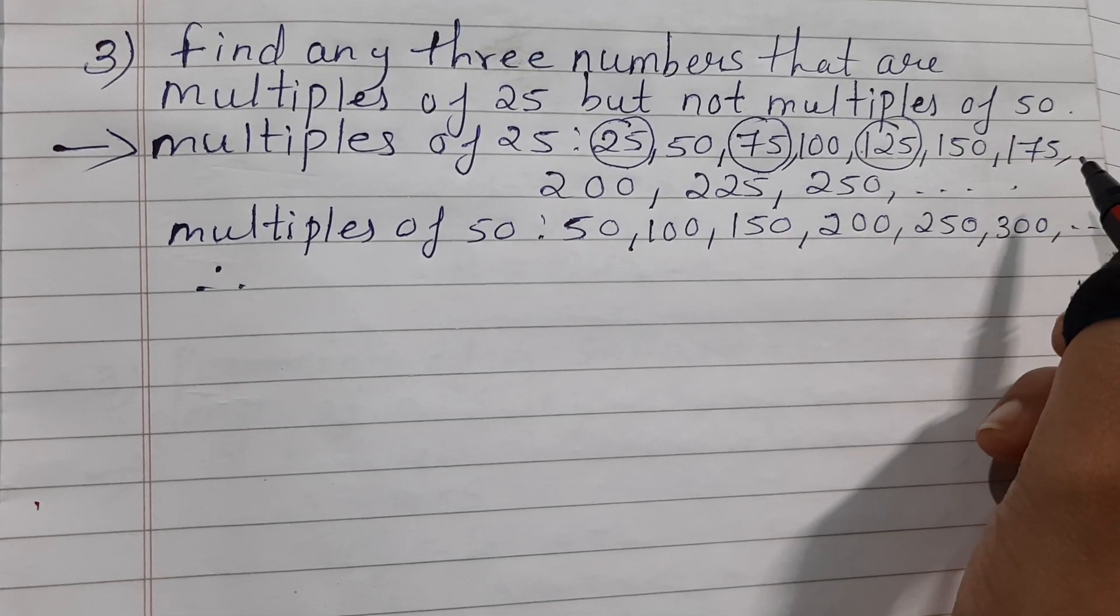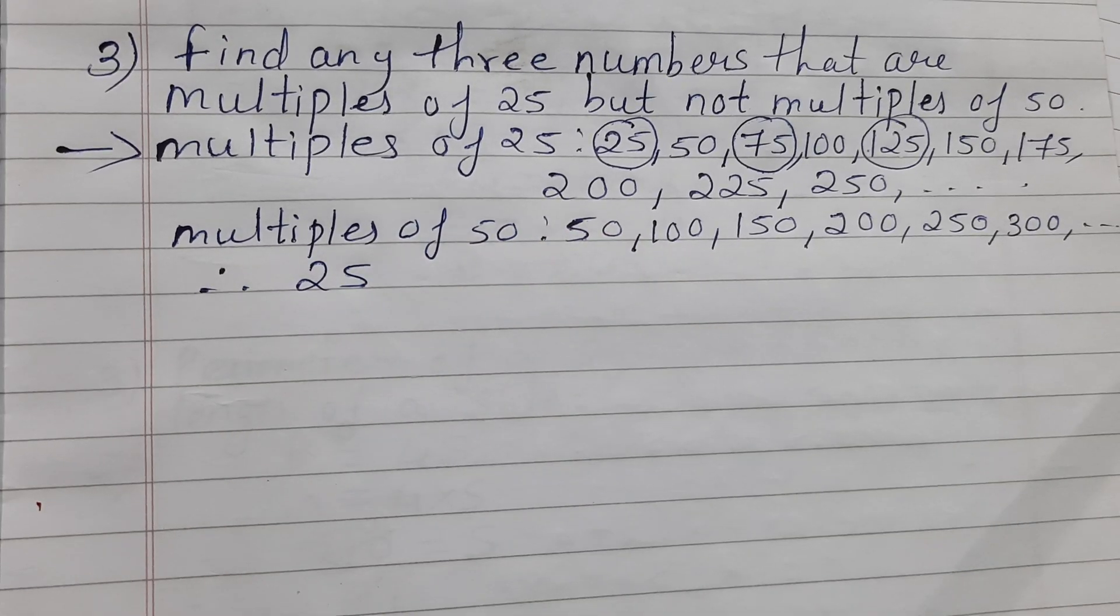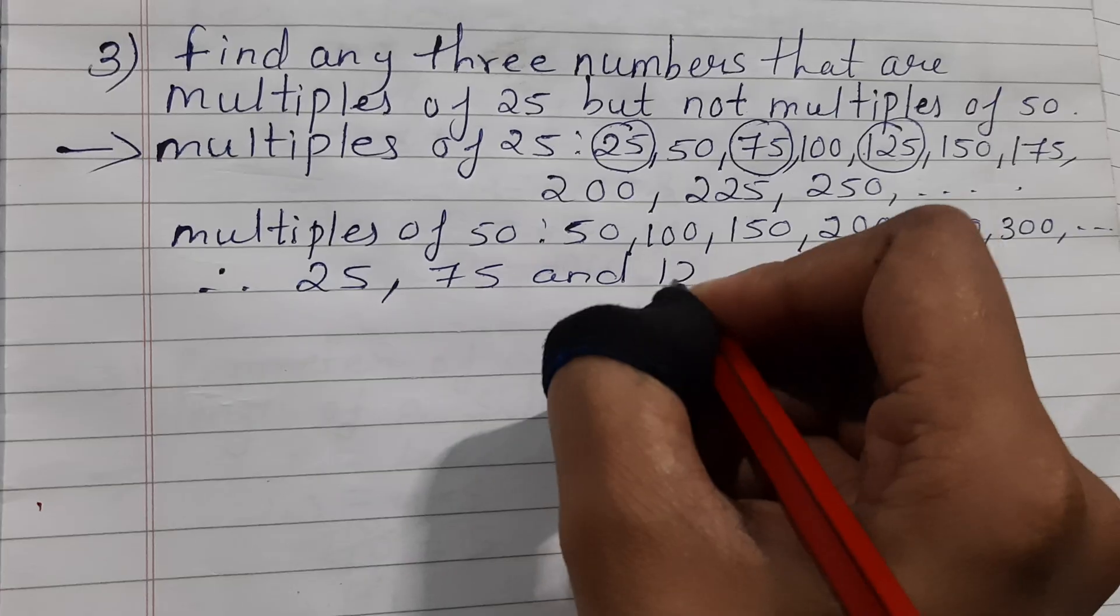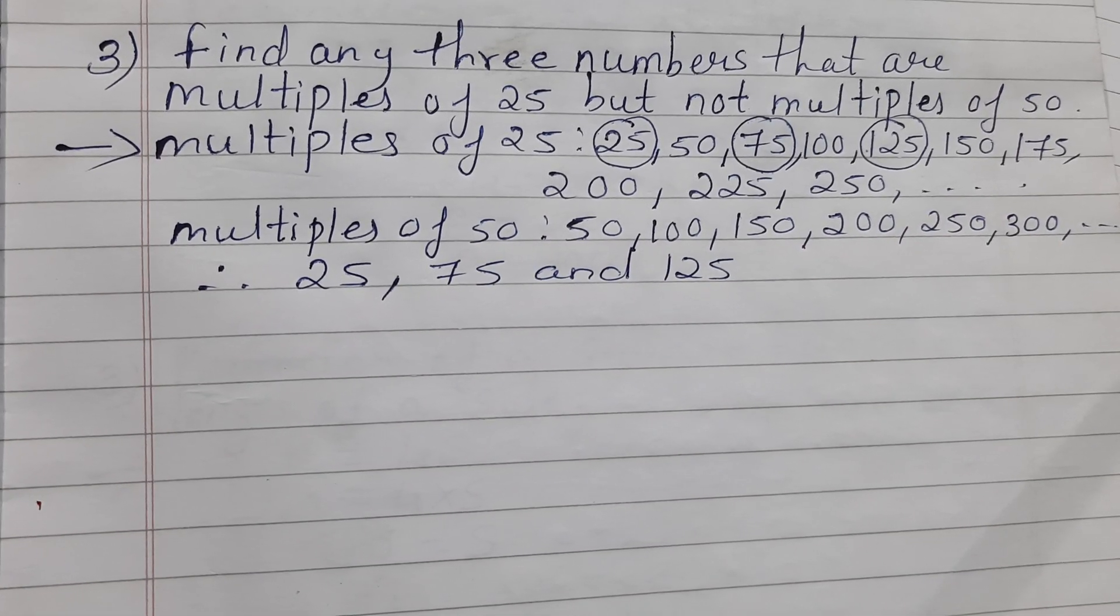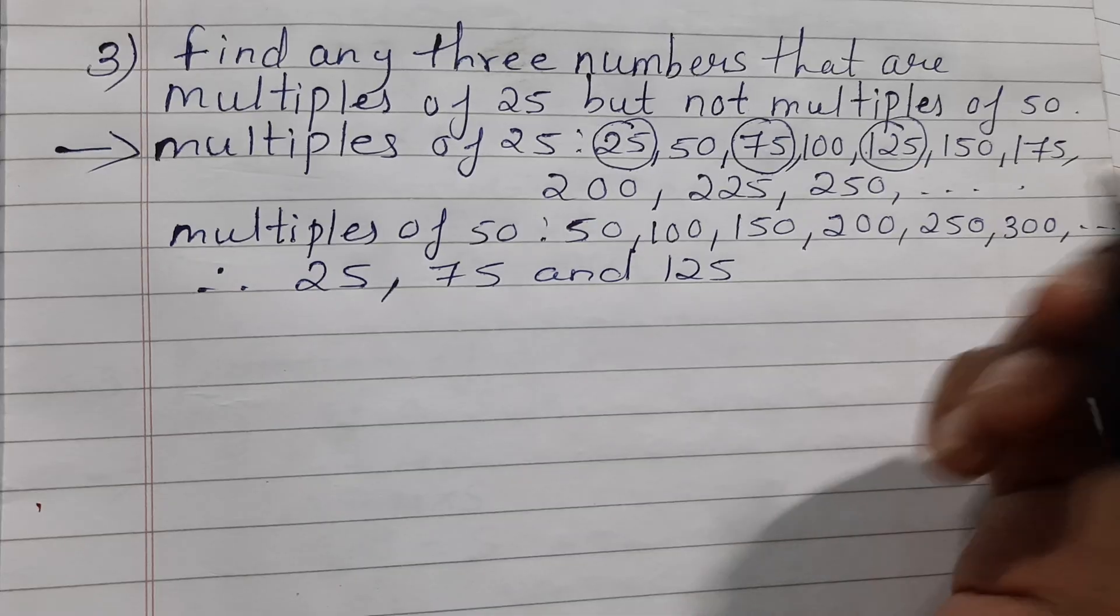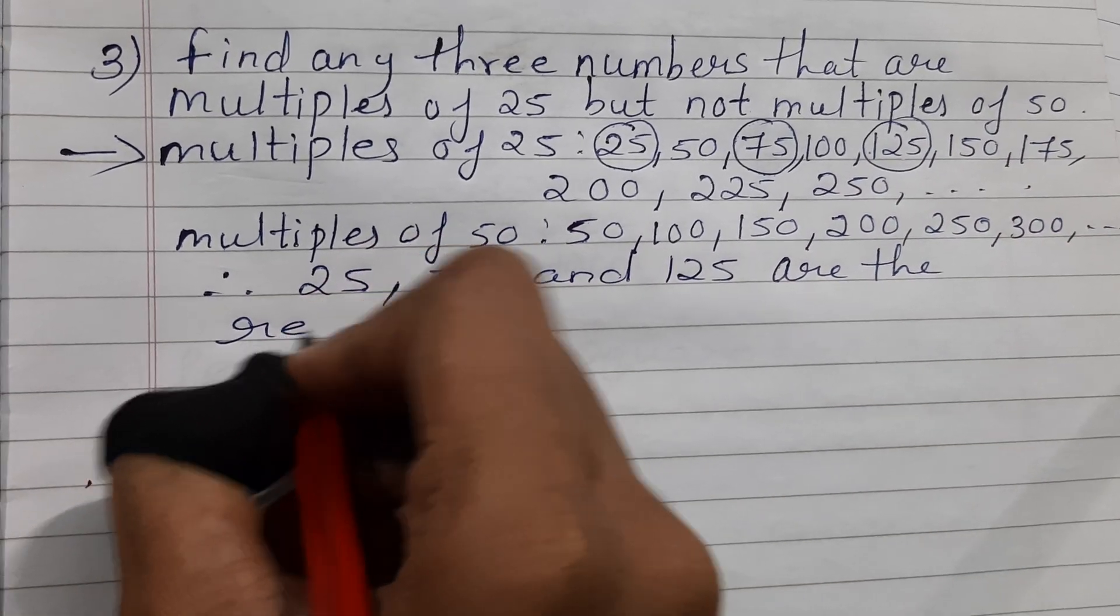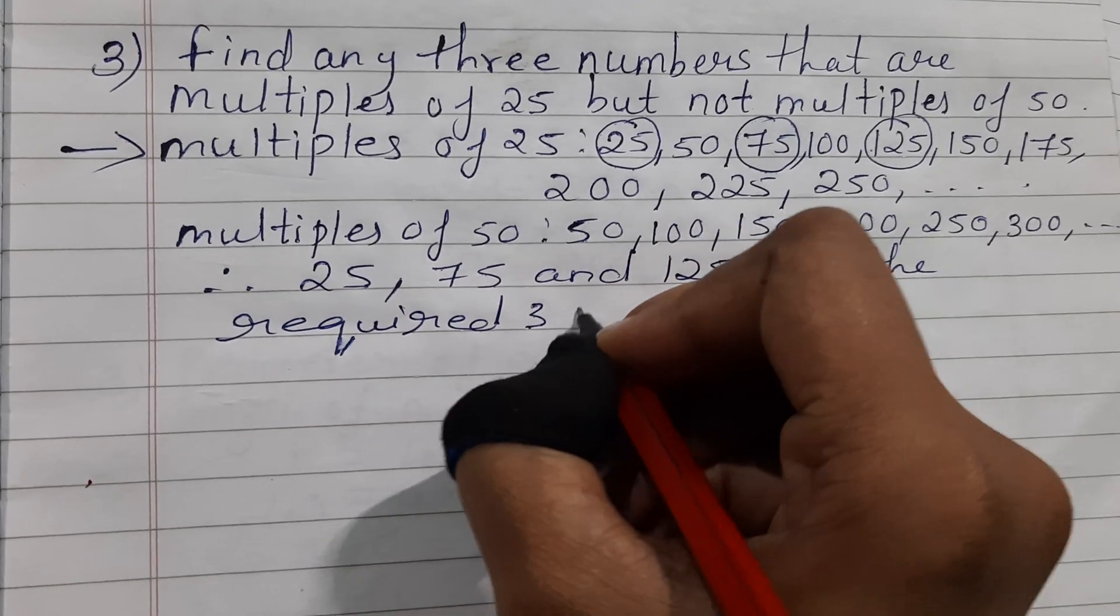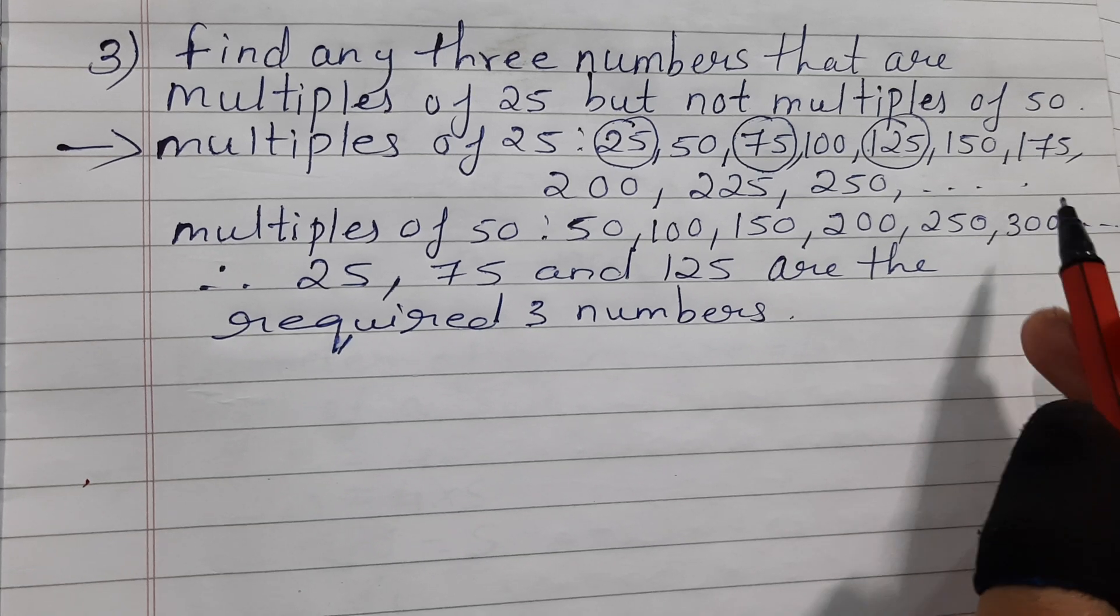Therefore, 25, 75, and 125 are the required 3 numbers which are not multiples of 50.